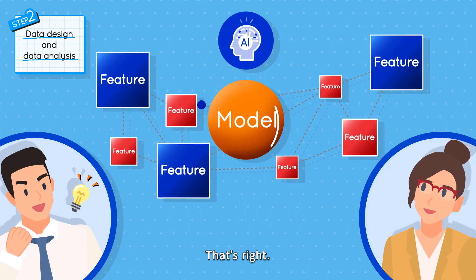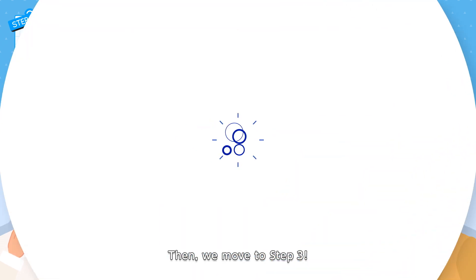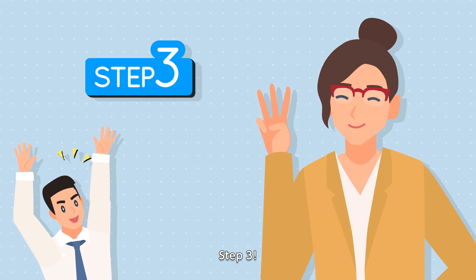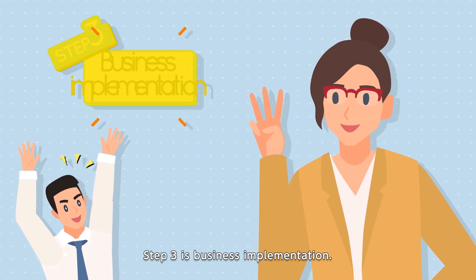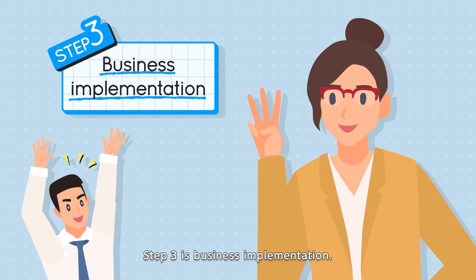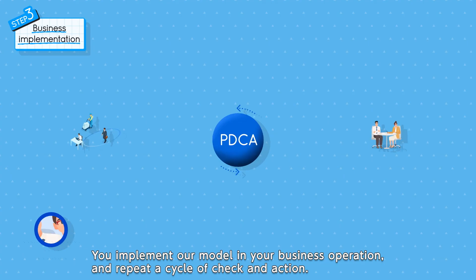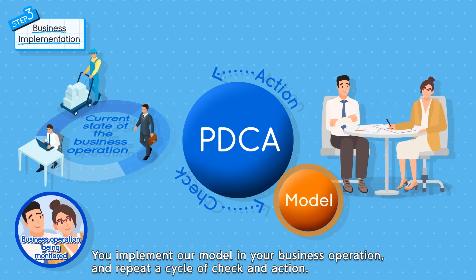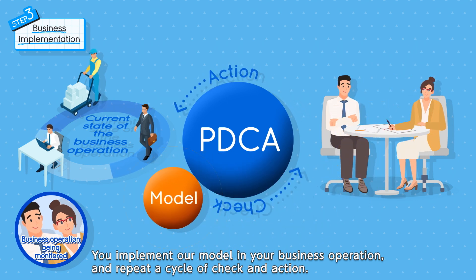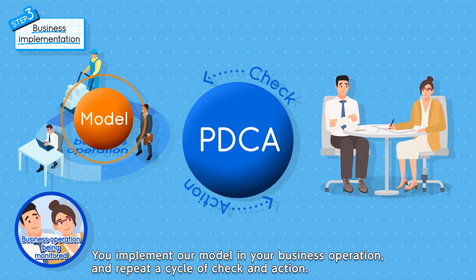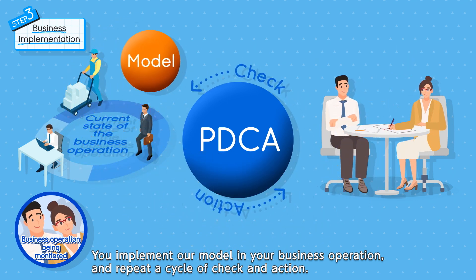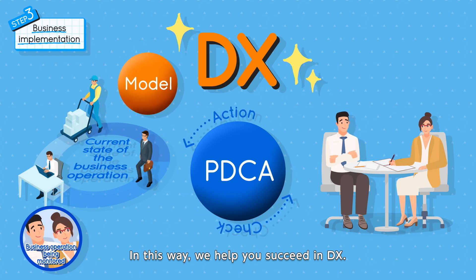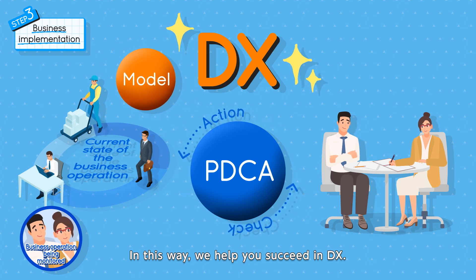That's right. Then, we move to step three. Step three is business implementation. You implement our model in your business operation and repeat a cycle of check and action. In this way, we help you succeed in DX.